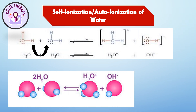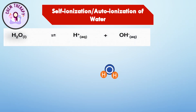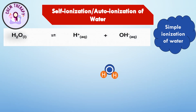We can write its equation as: H₂O + H₂O → H₃O⁺ + OH⁻. This equation is known as the self-ionization equation of water. We can also write it as simple ionization of water: H₂O → H⁺ + OH⁻.